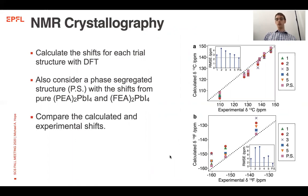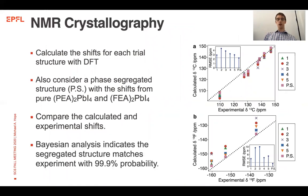When we compare these to experiment we see that the phase-segregated structure has a lower error in both the carbon and the fluorine than any of the other structures. Bayesian analysis indicates that the segregated structure matches experiment with 99.9% probability.